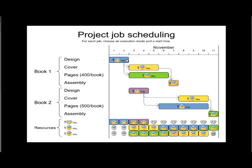As soon as the design is ready we can start producing it, but no earlier. We will start producing the cover — 10,000 covers over three days — and simultaneously produce the pages: 10,000 copies of 400 pages per book, taking four days (about 100 pages per day). We can do these two things in parallel, assigning one worker to covers and one to pages, so by day seven both are done.